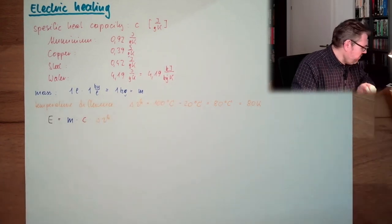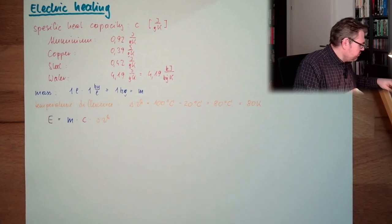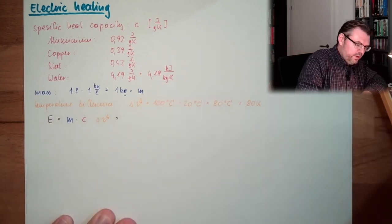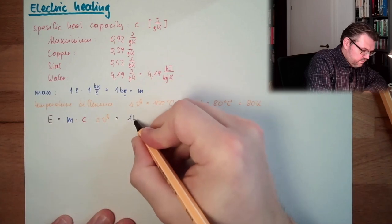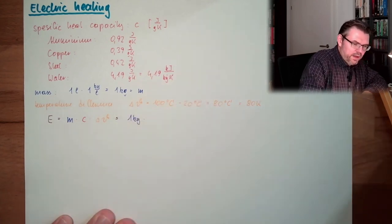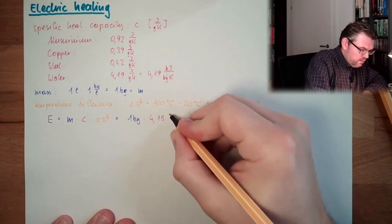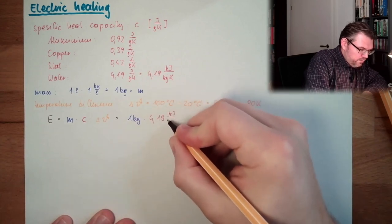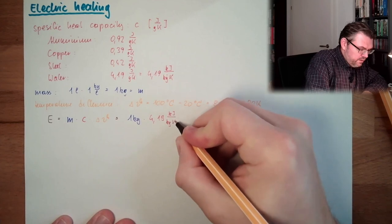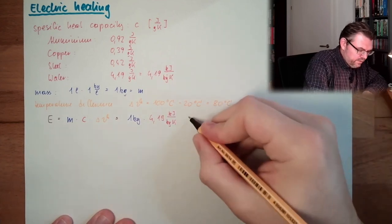And in our case, this would mean, let's see, we have 1 kilogram. Multiplied by 4.19 kilojoule by kilogram and kelvin. Multiplied by 80 kelvin.